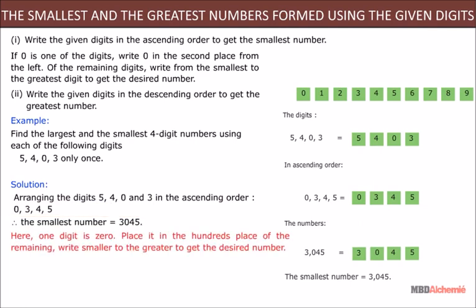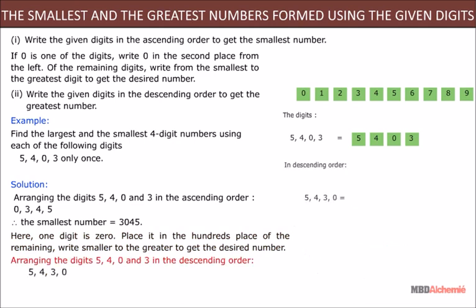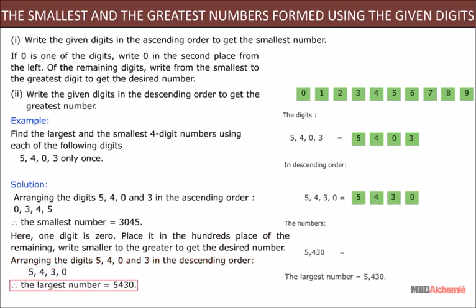Here, one digit is 0. Place it in the hundreds place. Of the remaining, write smaller to the greater to get the desired number. Arranging the digits 5, 4, 0, and 3 in the descending order: 5, 4, 3, 0. Therefore, the largest number is 5430.